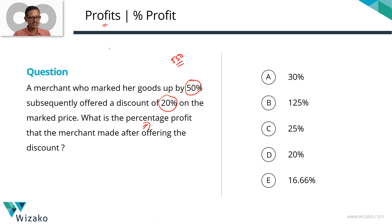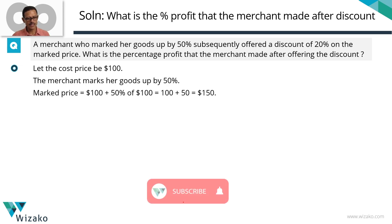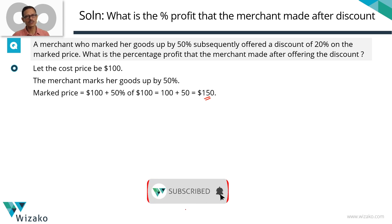In profit questions, assume cost price to be 100. So let the cost price for the merchant be $100. The merchant is marking the goods up by 50%, so she adds 50% of 100 as a markup. The marked price is going to be 100 plus 50, which equals $150.